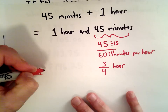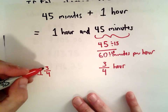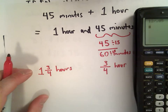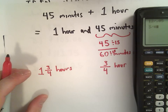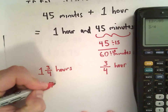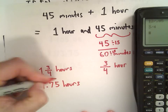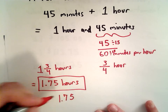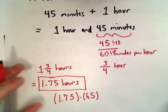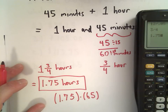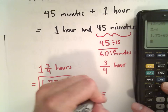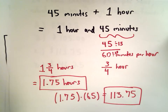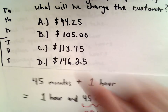In total, it's going to take him 1 and 3/4 hours. Writing 3/4 as a decimal: 3 divided by 4 is 0.75, so it takes him 1.75 hours total. He charges a rate of $65 per hour, so: 1.75 multiplied by 65 gives us $113.75 total. That's answer choice C.